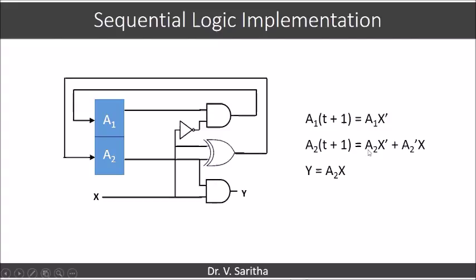A2 of t plus 1 equal to a2 x bar plus a2 bar x. I am using xor gate for construction of this that is a2 xor x. So, a2 is connected directly here and x is directly connected here and giving to connection to a2.